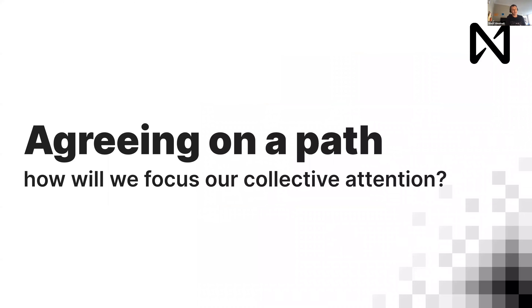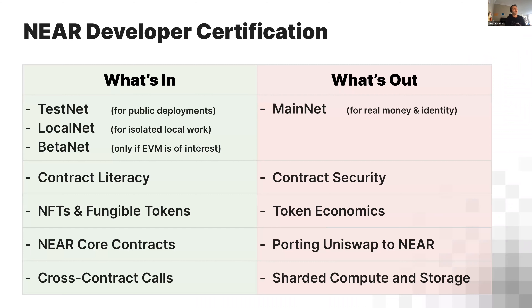Let's agree on a path — what's in and what's out. We're going to be talking about testnet, localnet, and betanet, contract literacy, NFTs and fungible tokens, core contracts, and cross-contract calls. That's all in this week. What's out this week is mainnet — we're not going to talk about deploying to mainnet because there's more you have to do if you really want to deploy a trustless application. You need to manage your keys and remove them so the contract can't be modified.